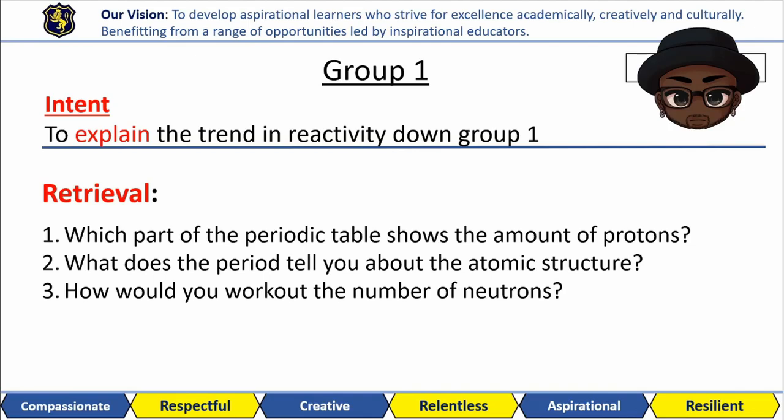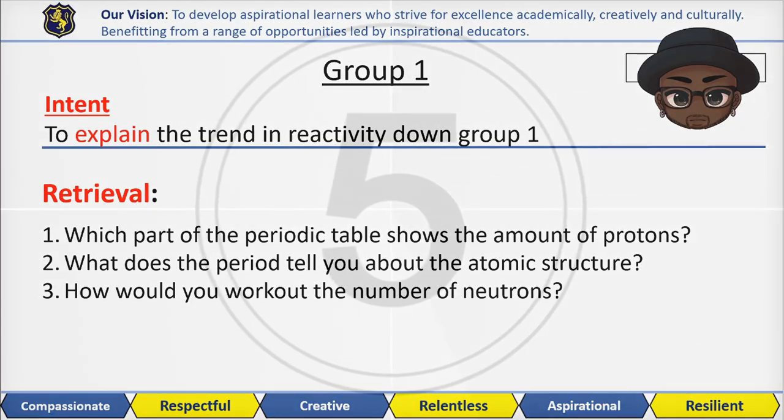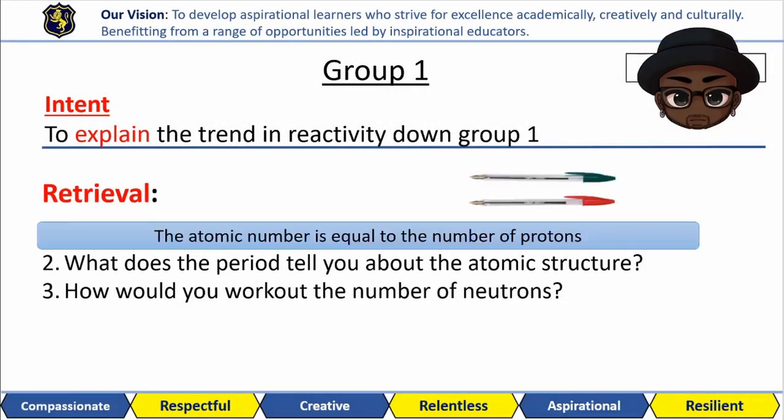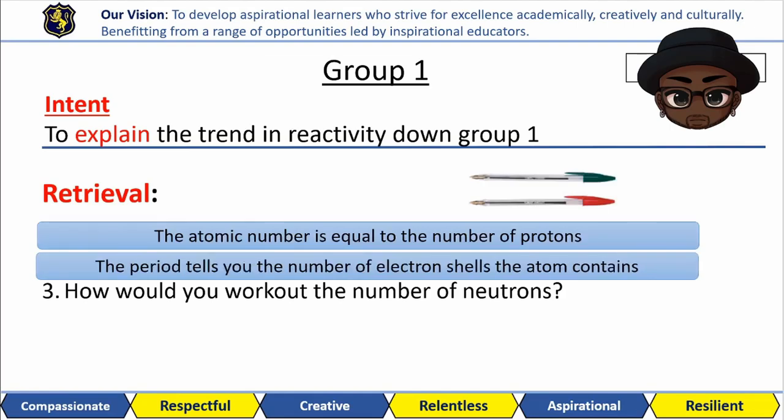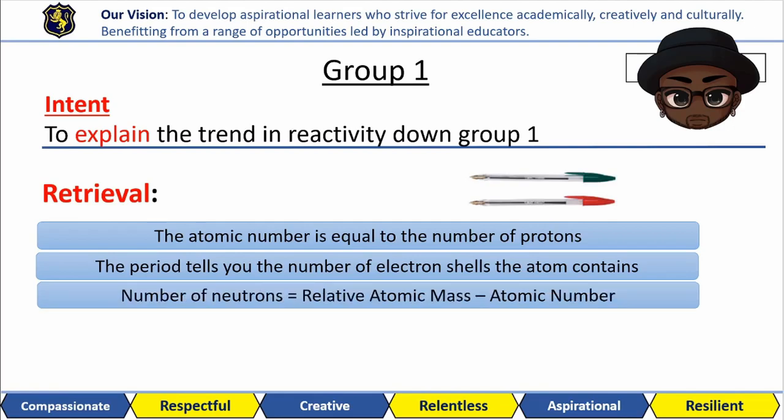Here are the retrieval questions for this lesson. You know what to do. The atomic number is the same as the number of protons in an atom. The period an element is on tells you the number of electron shells that it contains. You can work out the number of neutrons by taking away the relative atomic mass, the large number, from the atomic number.